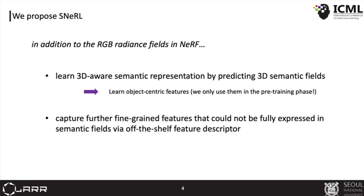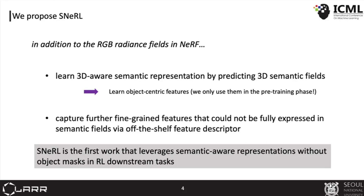Also, to capture other fine-grained features that could not be fully expressed in semantic fields, we employ an off-the-shelf feature descriptor as a teacher network and learn to predict feature fields via a distillation method. The proposed method, SNAR, is the first work that leverages semantic-aware representations without object masks in downstream tasks.